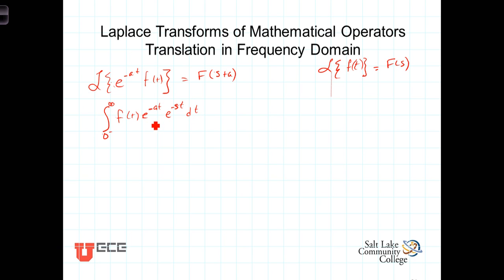Now, notice we have two exponents multiplied together, exponential terms multiplied together, add the exponents. This then gives us the integral from 0 minus to infinity of f of t times e to the minus s plus a t dt. So these two terms both have t's, factor the t out, factor the minus sign out, and we're left with e to the minus s plus a times t dt.